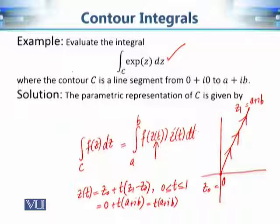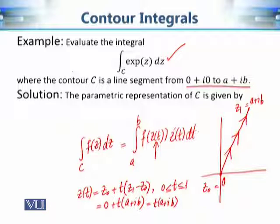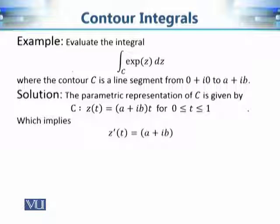The geometrical condition is satisfied: it is a line segment from 0 to a + ib. When t = 0 we get the origin, and when t = 1 we get the point z₁ = a + ib, so we are moving from 0 to z₁. That is the direction of motion. We also need the derivative z'(t) of this parameterization.